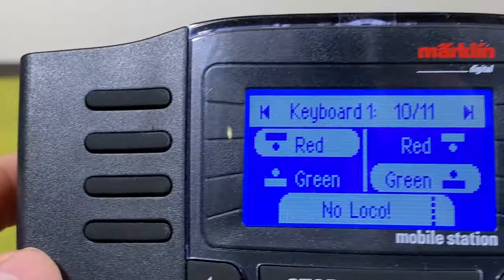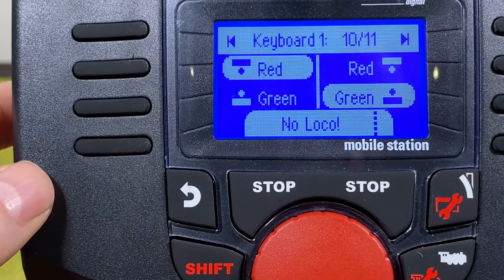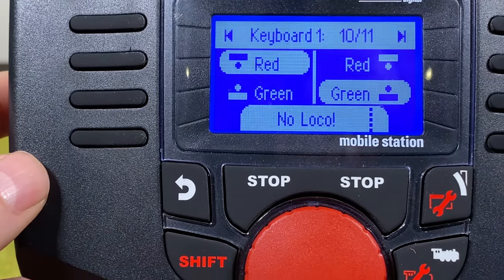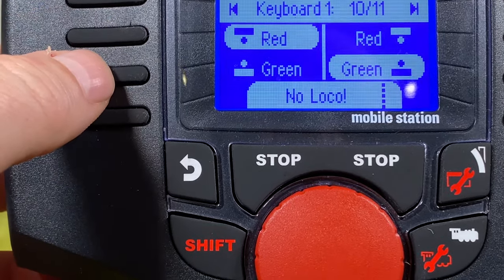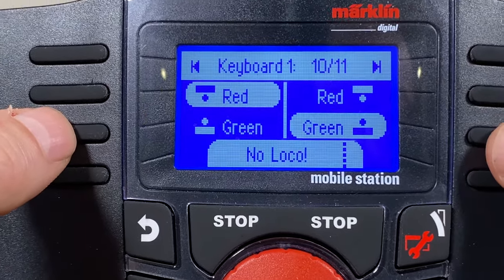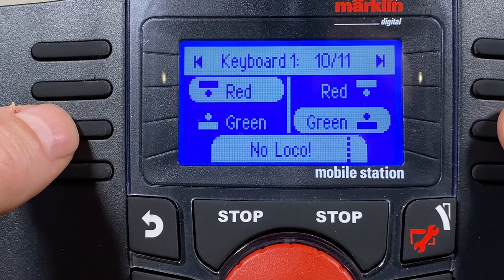We can look at the mobile station 2. It's actually address 10 and 11 for these signals. I can use red green on address 10 and I can use the green on address 11 for proceed slowly.